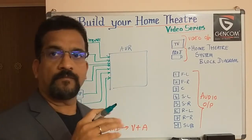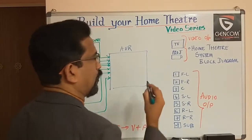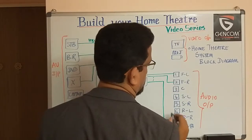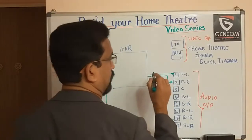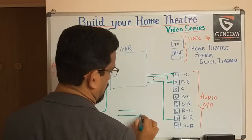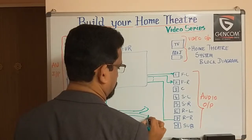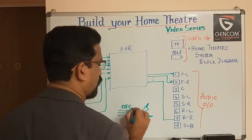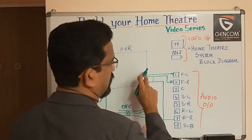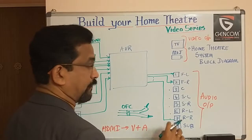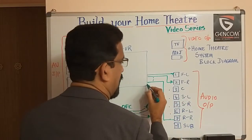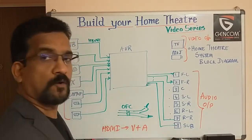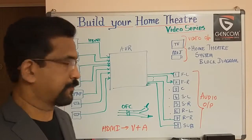The AV receiver has separate outputs for seven channels, which I connect to each speaker — one through seven. These use oxygen-free copper (OFC) cables, which are speaker cables approximately 6mm in dimension. The OFC cable runs from each AV receiver output to each of the seven speakers. For the subwoofer, there is a separate output called Sub 1, and most receivers also have Sub 2, connected via a standard RCA cable on both sides.